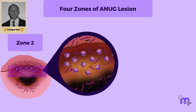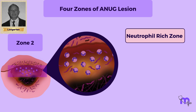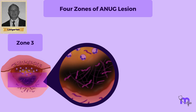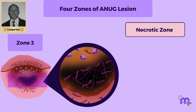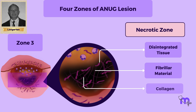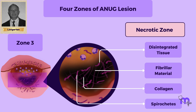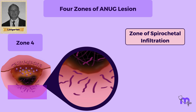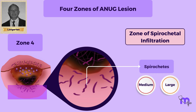Zone 2 is called the neutrophil-rich zone, as it is rich with neutrophils, a type of leukocyte or white blood cell. Among these neutrophils, we can also see many spirochetes. Zone 3 is called the necrotic zone because it is made up of disintegrated tissue, fibrin material, remains of collagen, various spirochetes of medium and large types, and some other organisms. Zone 4 is the zone of spirochetal infiltration. This zone has only medium and large spirochetes. Tissue disintegration is absent as this is the deepest layer.